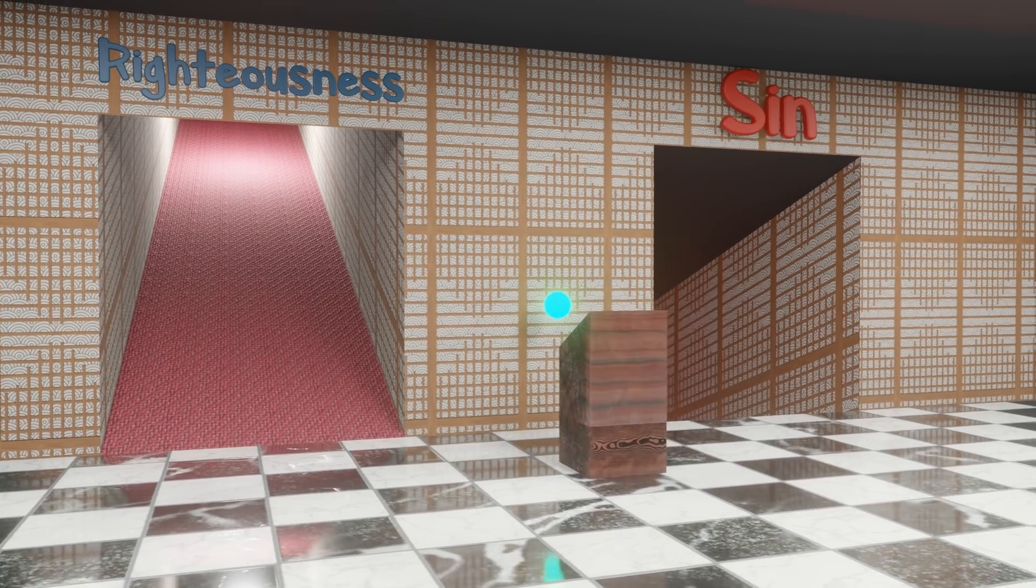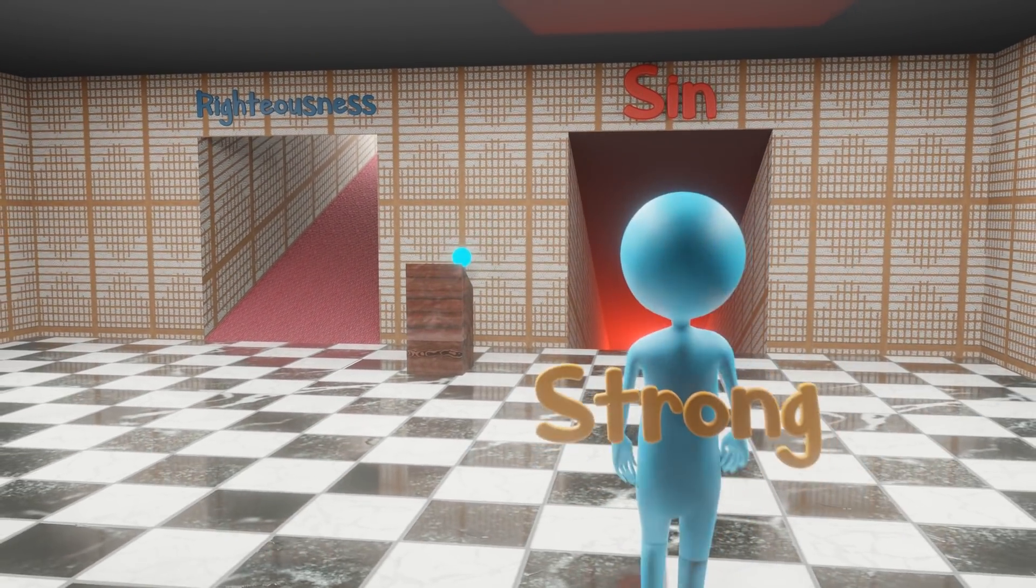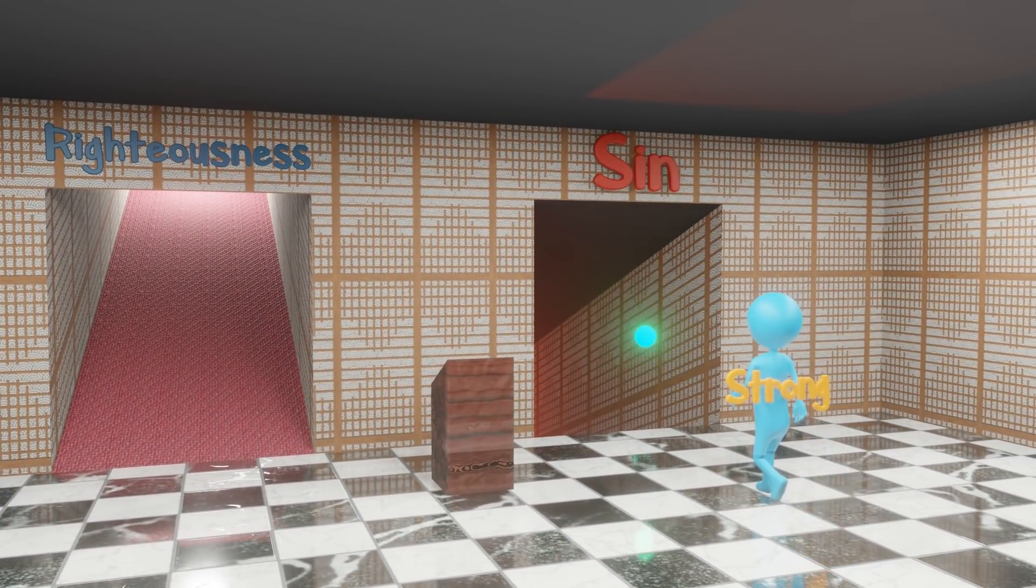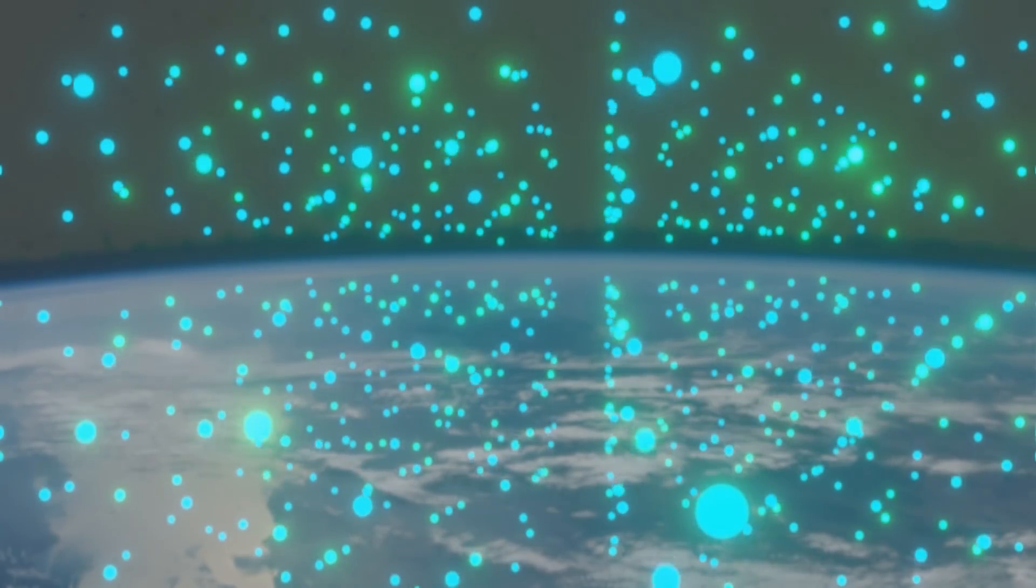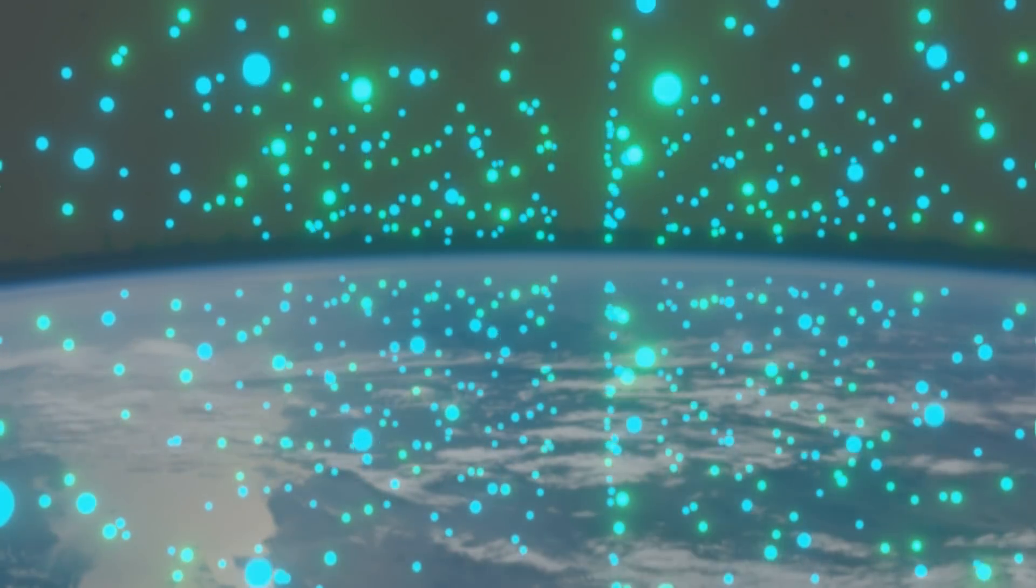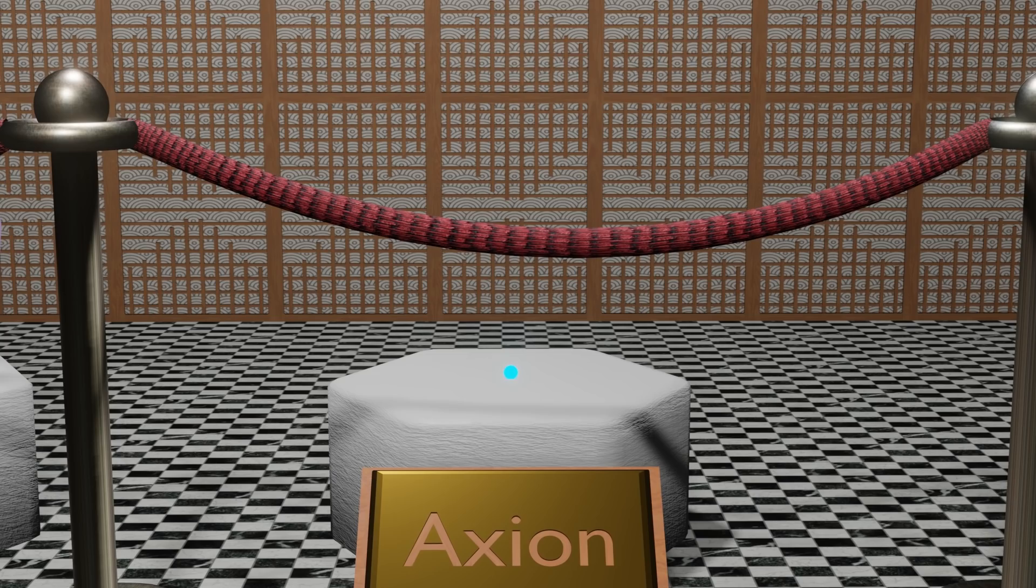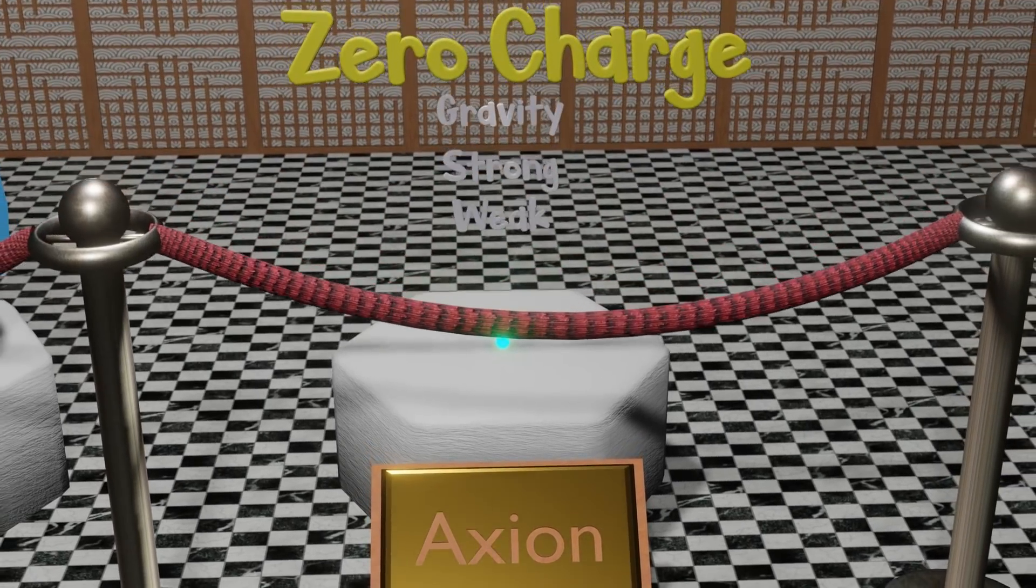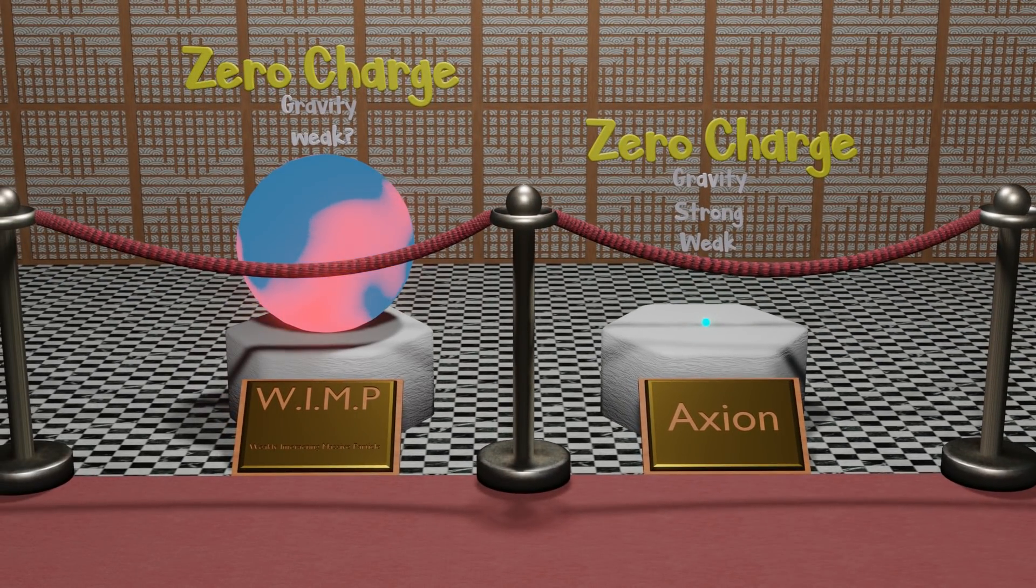The axion, if existed, would serve as an arbiter for strong charge parity symmetry, and whenever the strong force is about to violate it, it would step in and say, hey, don't do that! An axion would be a quantum field of extremely light and extremely abundant particles, akin to the abundance of photons and neutrinos. Axions would also possess no charge, and would only interact with matter through gravity and the strong and weak force. Quite similar to the proposed WIMP dark matter, except with tiny mass.